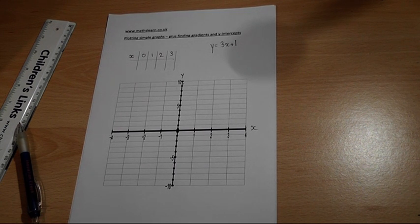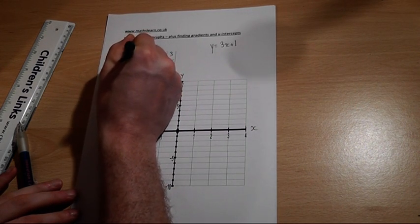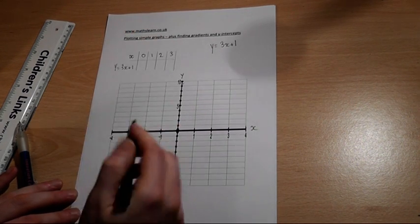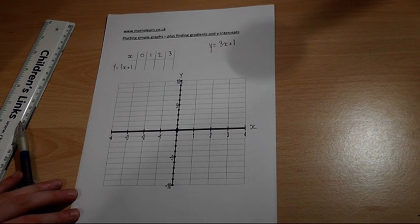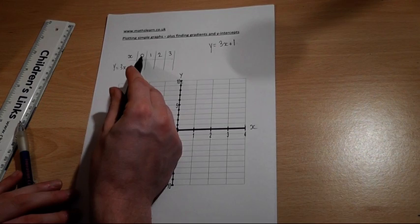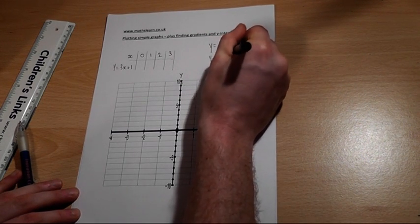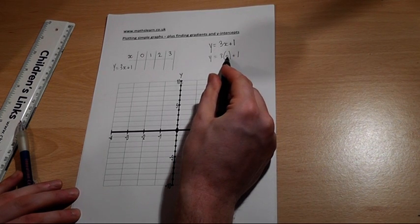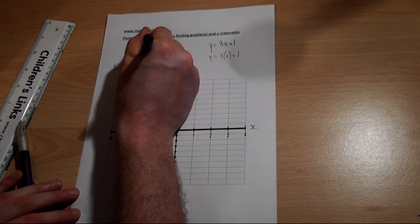And then I aim to find what the y coordinate equals at each of these x values. So for example when x equals 0, y equals 3 times 0 which is 0 plus 1 equals 1.